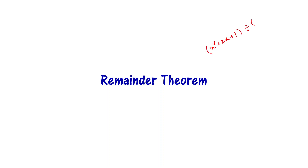Let us now learn about the Remainder Theorem. To understand its benefits, consider two polynomials: x squared plus 2x plus 1, which I want to divide by x plus 1. This is the dividend and that is the divisor. When you divide, you get a quotient and a remainder. If you know the Remainder Theorem, you don't need to do this division — without dividing, you can directly say what the remainder is. That is the benefit of using the Remainder Theorem.